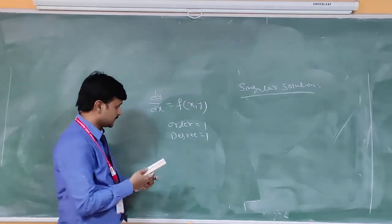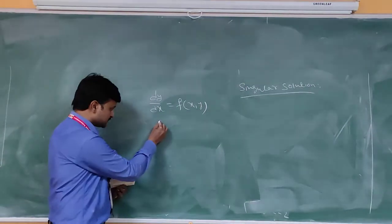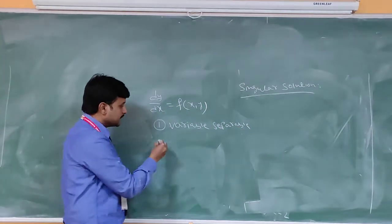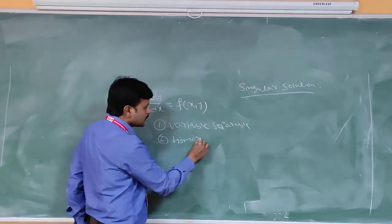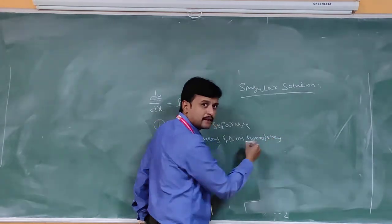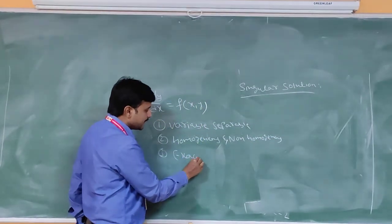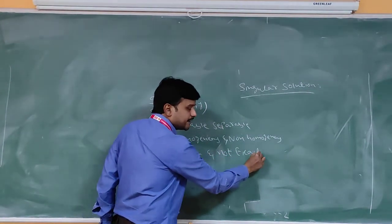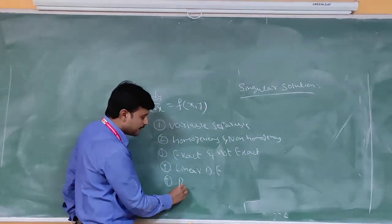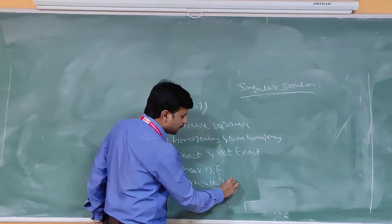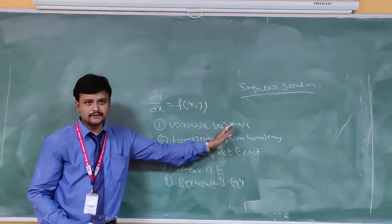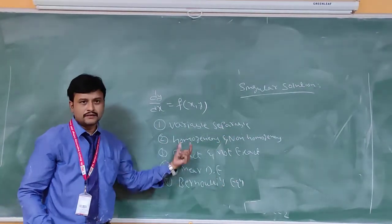There are some types of first order and first degree differential equations. The first one is variable separable type, the second is homogeneous and non-homogeneous, the third is exact, the fourth is linear differential equation, and the fifth is Bernoulli's equation. Next class we can learn all these types. Thank you.